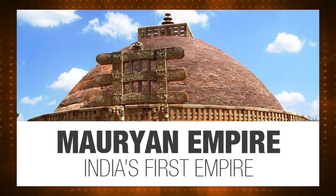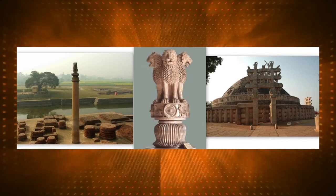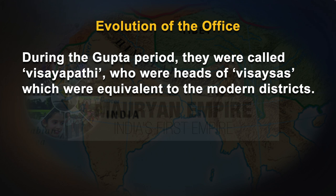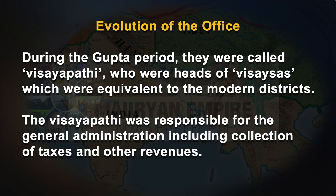The office of the District Collector in India has a long history. Its origin is related to the concept of a territorial unit of administration. During the Mauryan period, the kingdom was divided into convenient territorial units and each unit was placed under an official known as Rajuka. Though they were essentially revenue officers, they also exercised judicial functions. Rajukas collected land revenue, maintained roads, promoted trade and industry, and carried out public works like irrigation. During the Gupta period, they were called Vaishyapati, who were heads of Vaishyas, equivalent to the modern districts. The Vaishyapati was responsible for general administration including collection of taxes and other revenues.